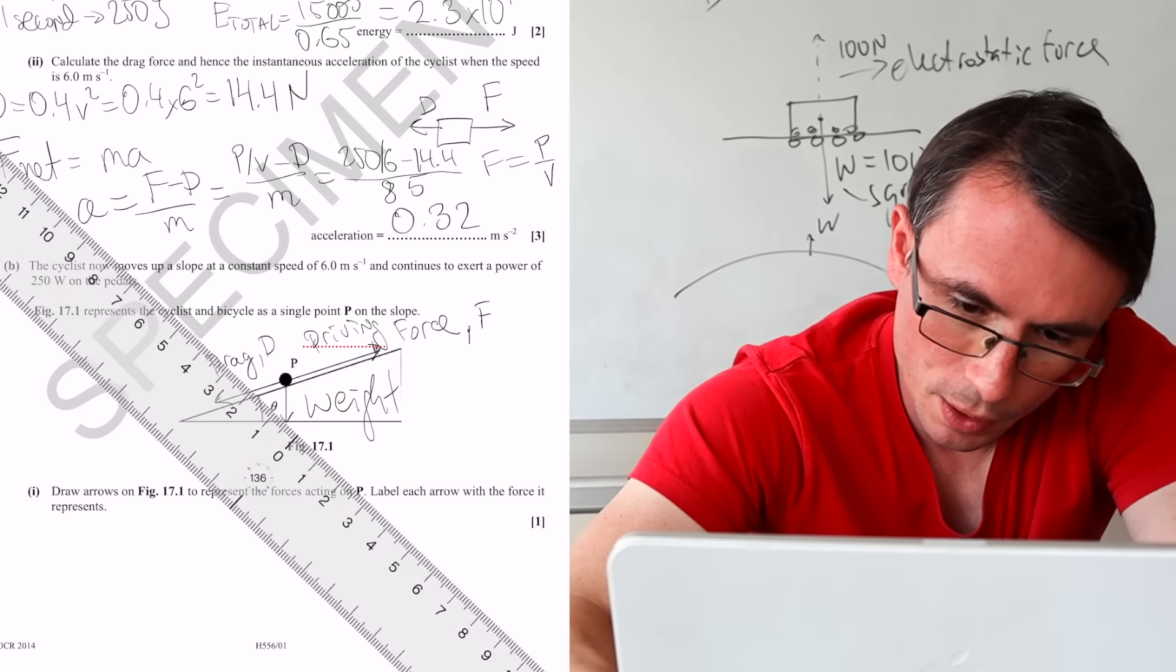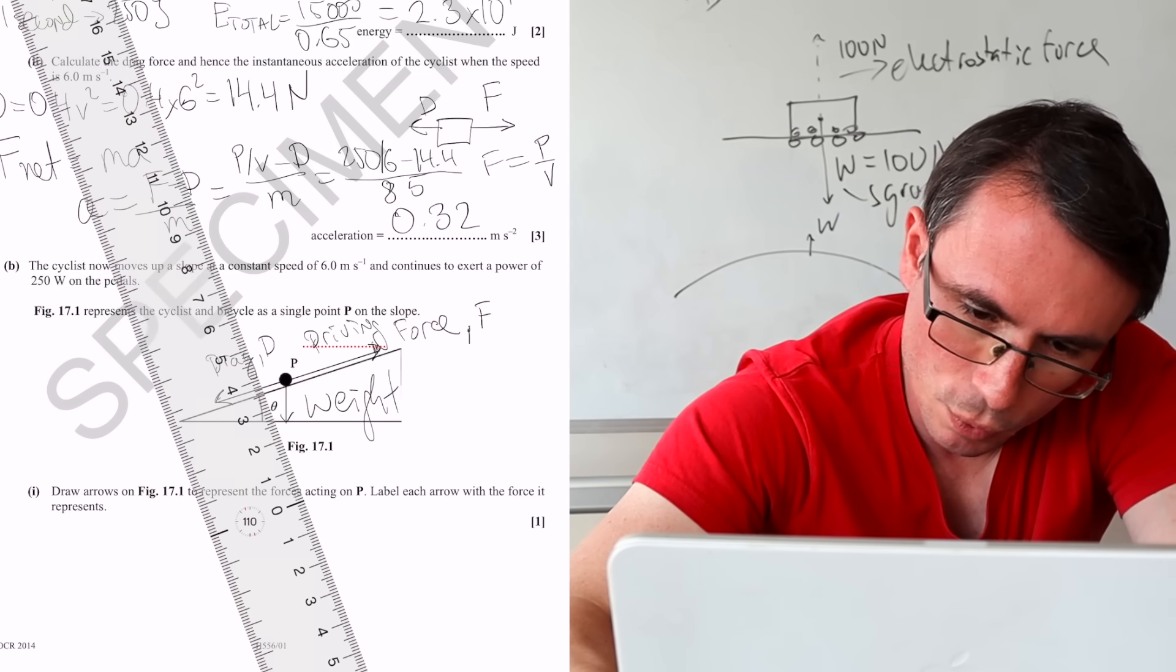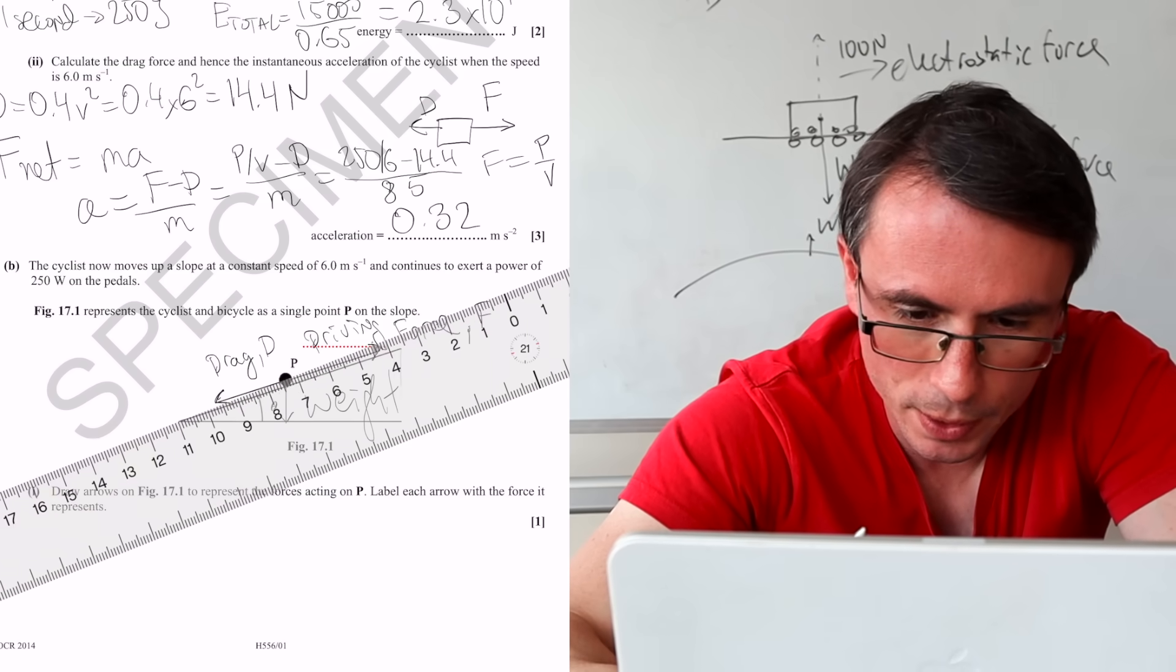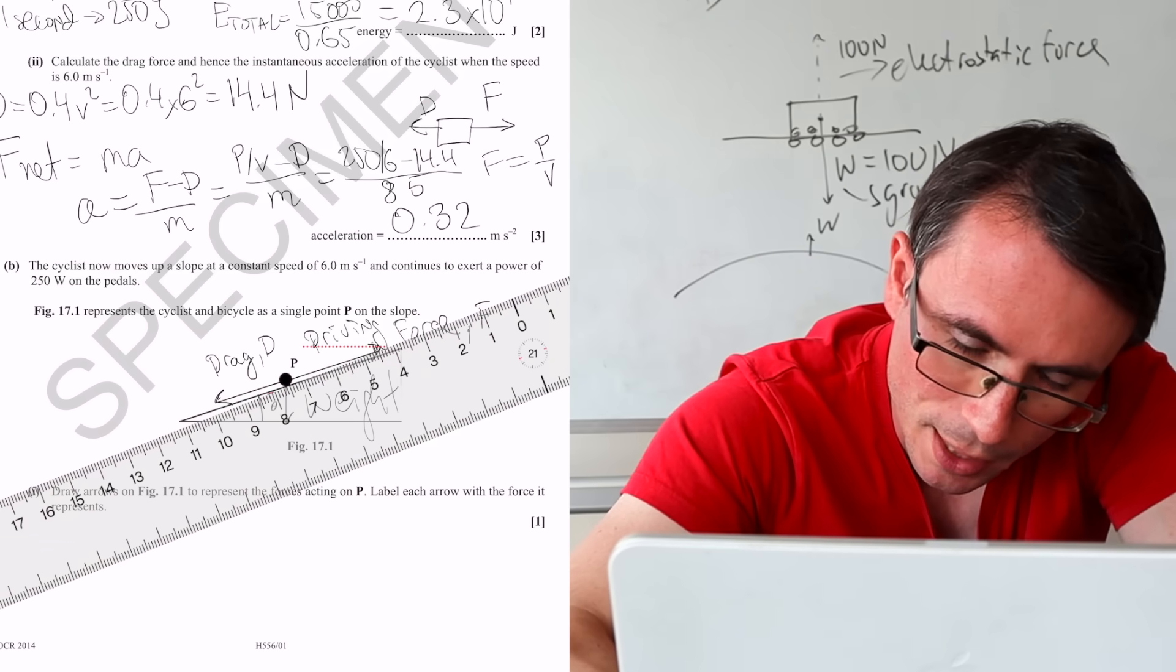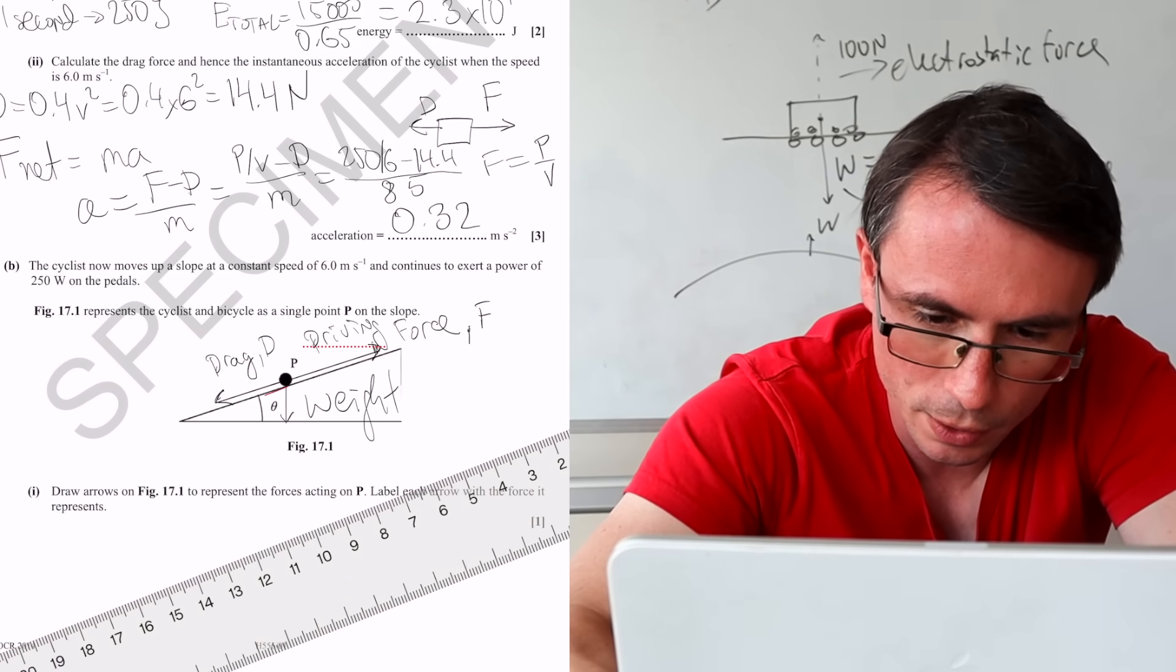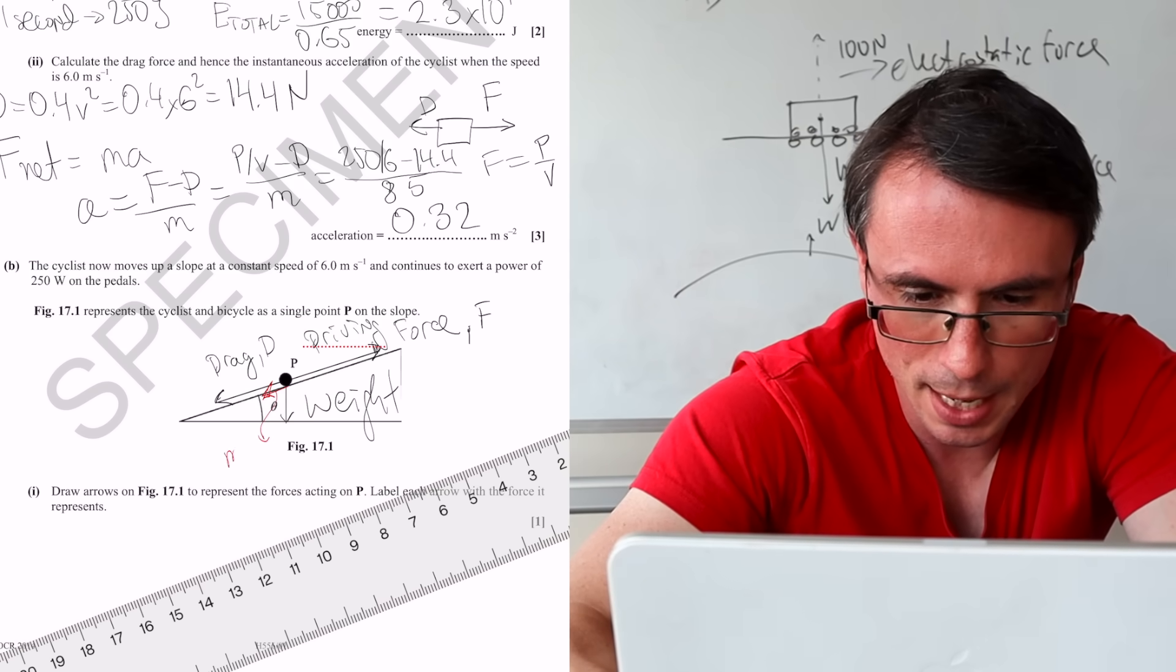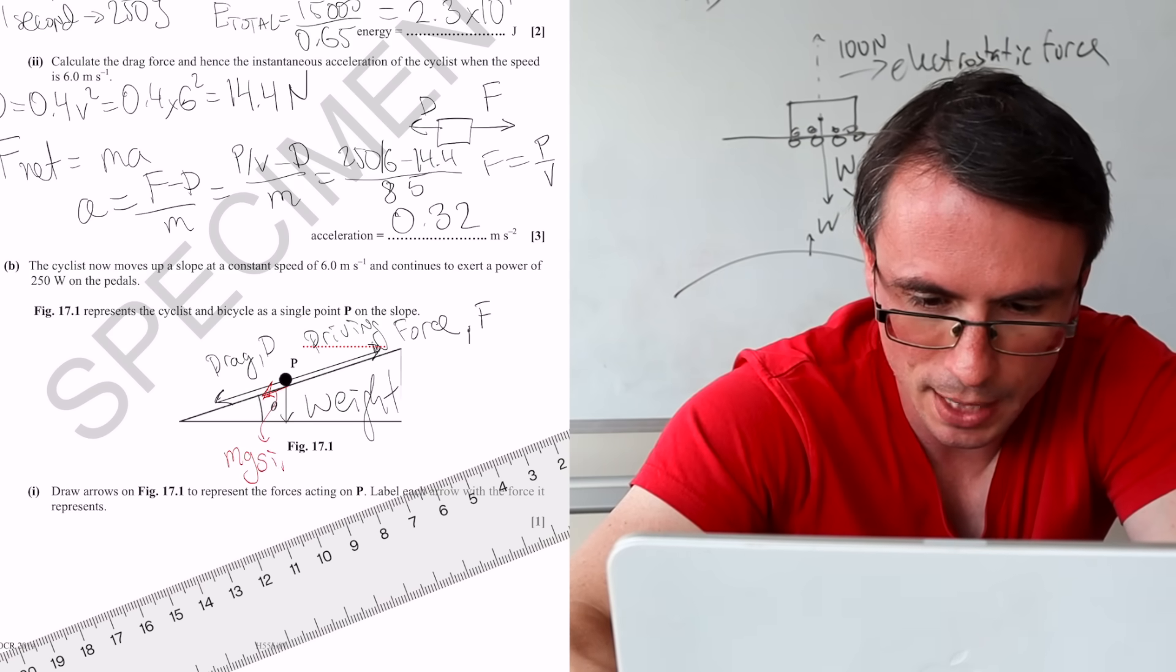One of the components will be perpendicular. We don't really need to worry about this one, but there will also be a component of the weight which will be along the slope right across here. This component of the weight will just be Mg sine of the angle.